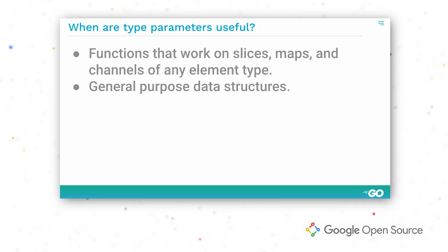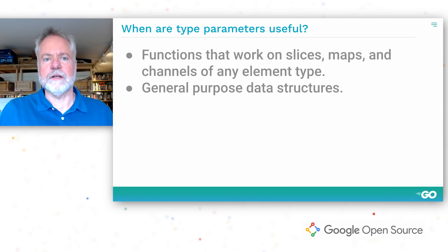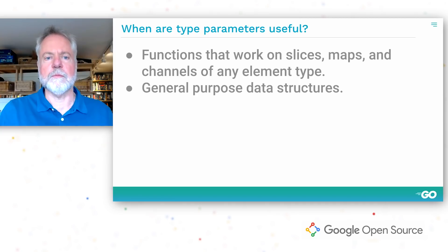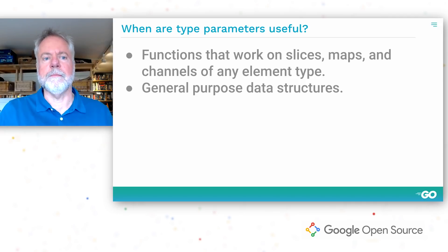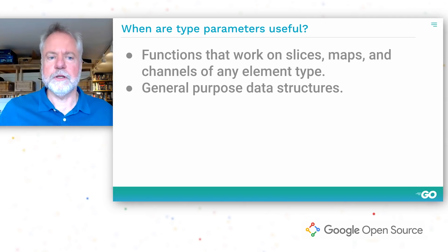Another similar case where type parameters can be useful is for general purpose data structures — a data structure like a slice or a map, but one that's not built into the language, such as a linked list or a binary tree. Today, programs that need such data structures write them with a specific element type or use an interface type. Replacing a specific element type with a type parameter can produce a more general data structure. Replacing an interface type with a type parameter can allow data to be stored more efficiently and can mean that code can avoid type assertions and instead be fully type checked at compile time.